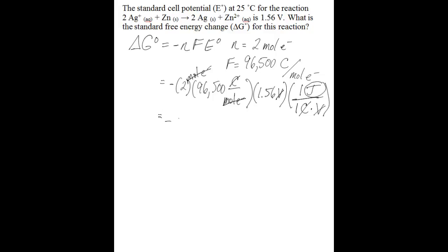If you do the math there, you'll be left with negative 301,080 joules. And if you want to convert that to kilojoules, all you need to do is divide by 1,000 to get 301 kilojoules.